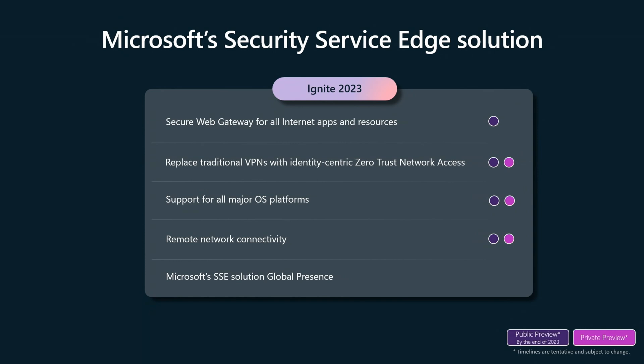We also expanded to the remote network, which is now in public preview. You can connect up your branch network, your VPC in AWS — any network, as long as it can support an IPsec tunnel, which every firewall and every SD-WAN device can, you can send the traffic to our globally distributed proxy. Lastly, we're now available all over the world. In July we were just in North America and Europe; we're now up everywhere except China and Russia, and China will come.